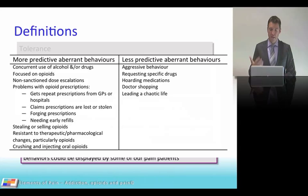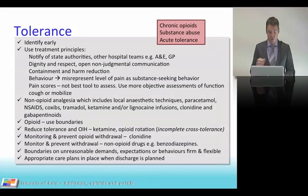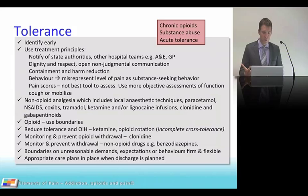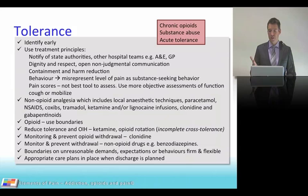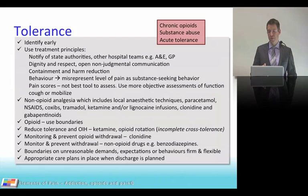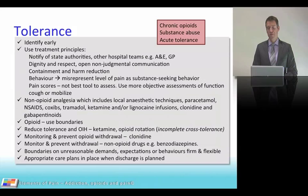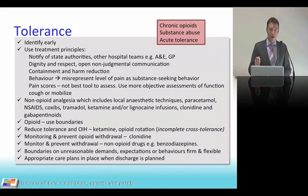Less predictive aberrant behaviors include aggression, hoarding medications, and doctor shopping. Regarding treatment of tolerance, tolerant patients include those on chronic opioids for pain or cancer, substance-abusing patients presenting with acute injury or surgery, and ICU patients who become acutely tolerant after high-dose morphine infusions. Once you switch the opioid or change something, patients can improve significantly.